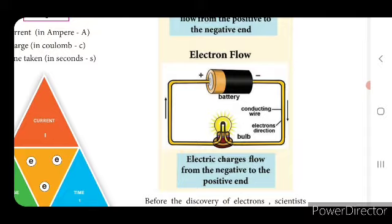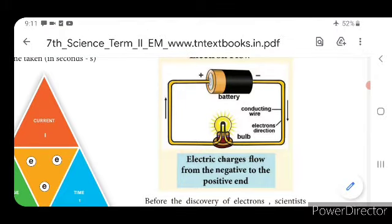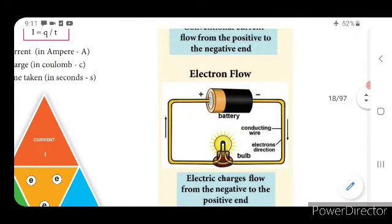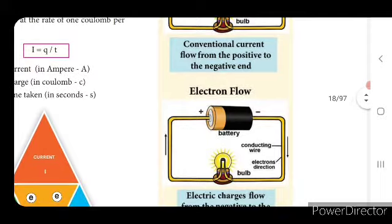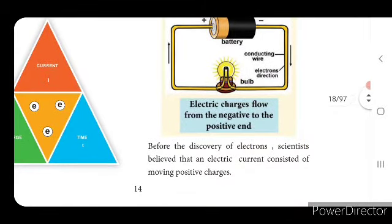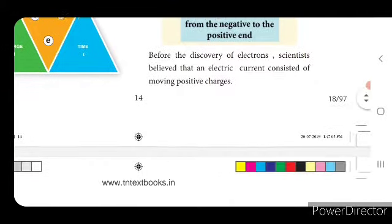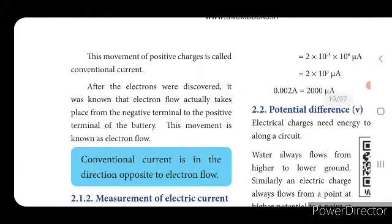This is the difference between conventional current and electron flow. In electron flow, electric charges flow from negative to positive. Before the discovery of electrons, scientists believed electric current consisted of moving positive charges — this is called conventional current. After electrons were discovered, it was known that electron flow actually takes place from the negative terminal to the positive terminal of the battery. So the conventional current is in the direction opposite to the electron flow.